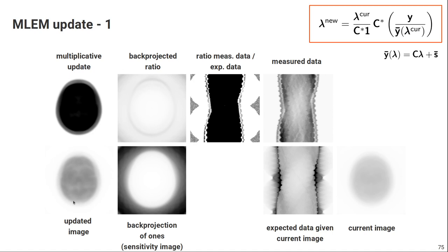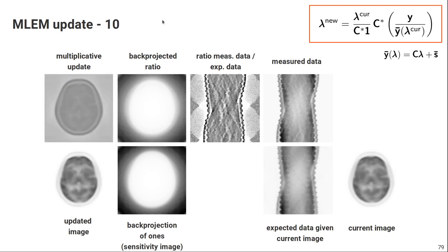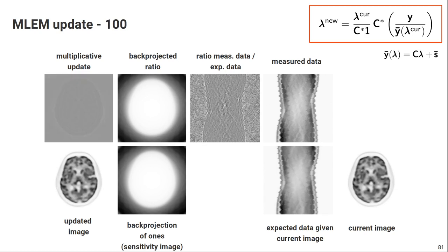Then we just start over again: we insert the updated image as our current image, apply the forward model to get expected data, calculate the ratio sinogram, back-project the ratio, divide by the sensitivity image, and multiply to get the updated image — that's the second MLEM update. We continue: update three, four, 10 updates, 50 updates, 100 updates, 200 updates, 500 updates, a thousand updates. After a thousand updates, the multiplicative update image is actually one everywhere or very close to one everywhere, and the updated image is almost the same as the input image — so we are converged.